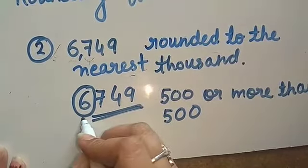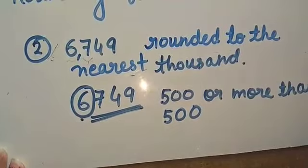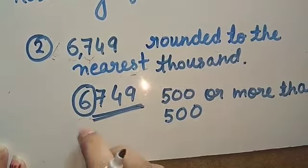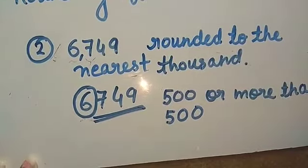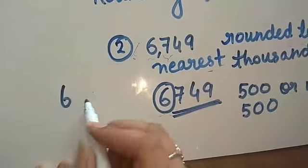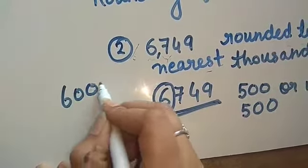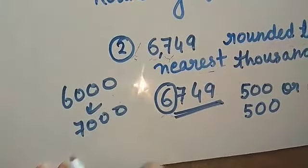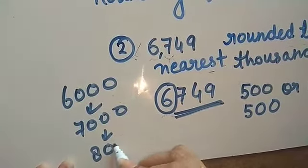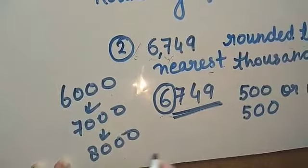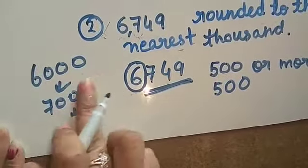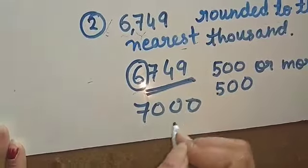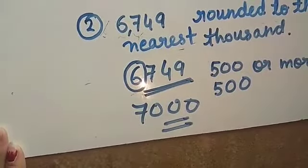Here, 6 is given in the thousands place. After 6000, the next thousand number is 7000. So our answer is 7000.